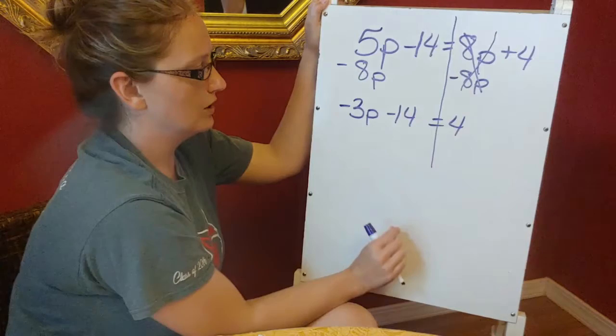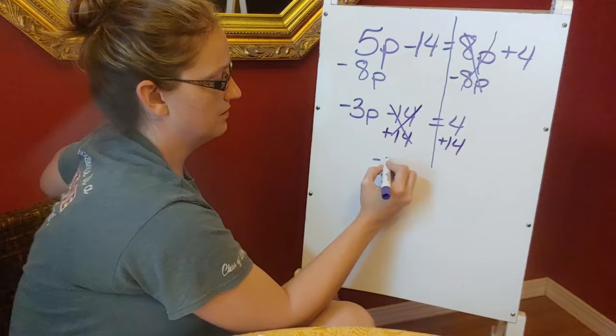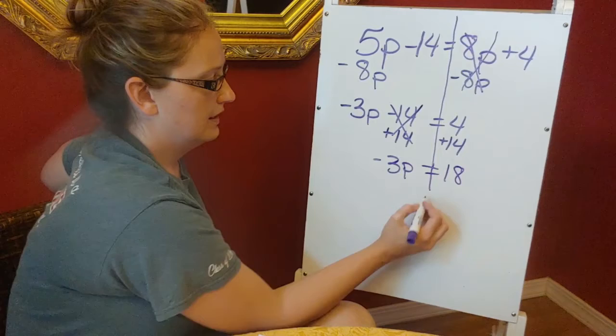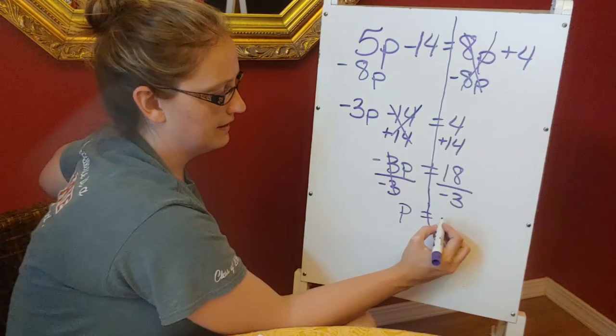Now I still, I'm going to work on getting p by itself. I'm going to add 14 to both sides. So negative 3p equals 18. Then for my last step, I'm going to divide by negative 3. And 18 divided by negative 3 is a negative 6.